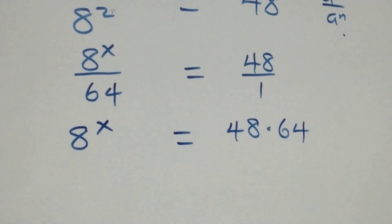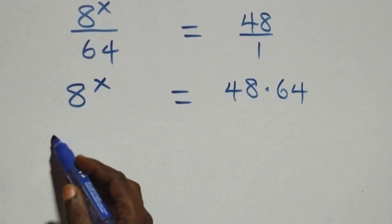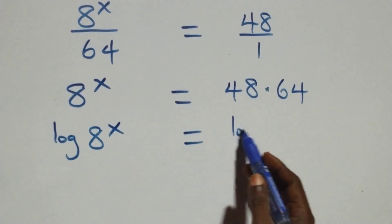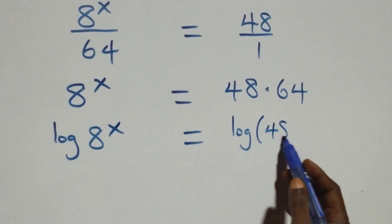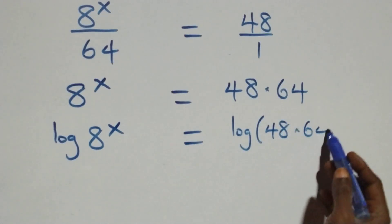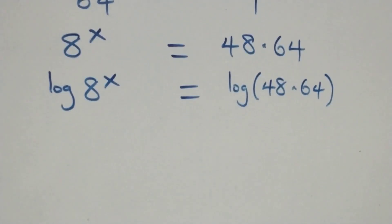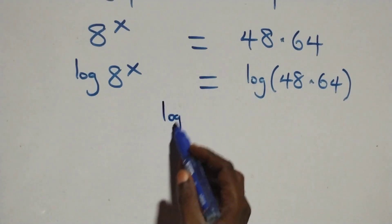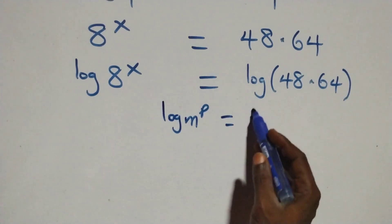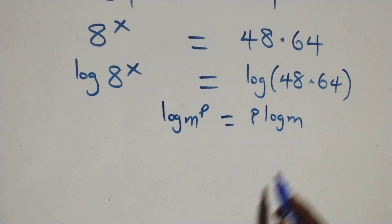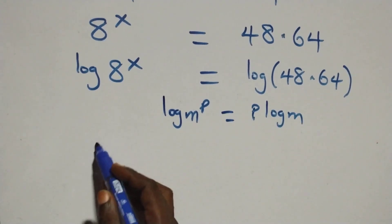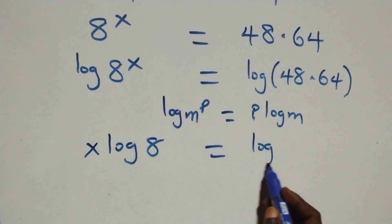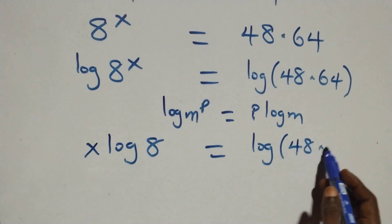Next, we take the log on both sides. We have log of 8 raised to power x equals log of 48 times 64. We then apply the power rule of logarithms: log of m raised to power p is the same as p log m. So this gives us x log 8 equals log of 48 times 64.